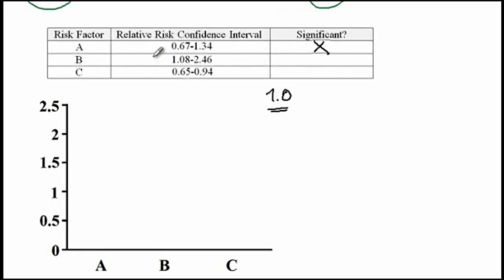Versus risk factor B, 1 actually falls under the 1.08 to 2.46. So therefore risk factor B does have a significant effect. And finally, for the last one, 1 falls above the range that is provided here, so risk factor C also does have a significant effect.